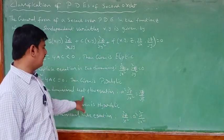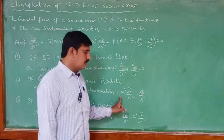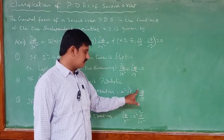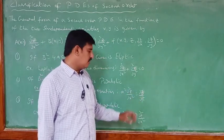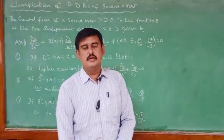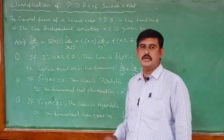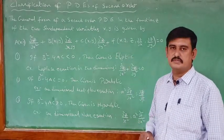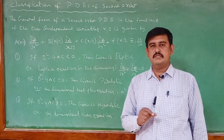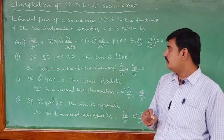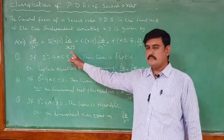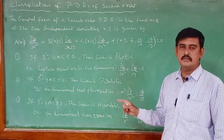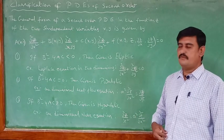In Unit 2, the first topic is the classification of partial differential equations — that means determining which form the given equation belongs to. How to classify? Based on the A, B, C values. These three types of classification of PDEs are very important.